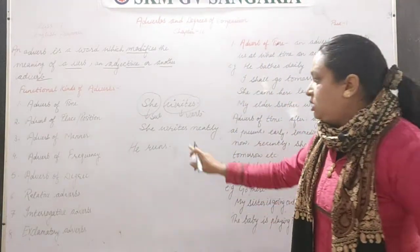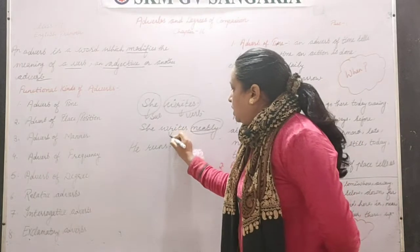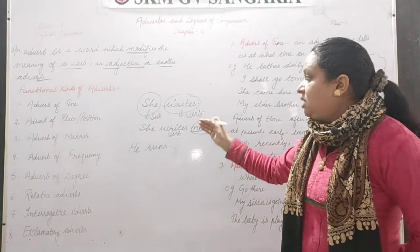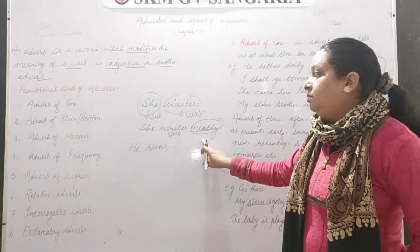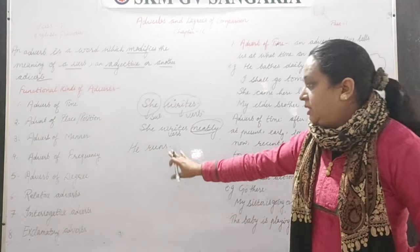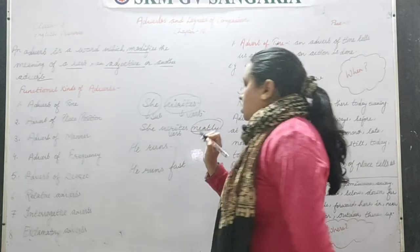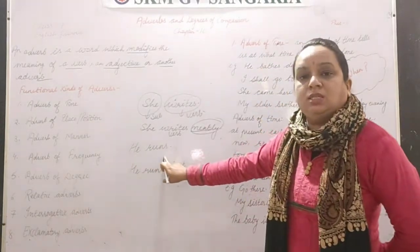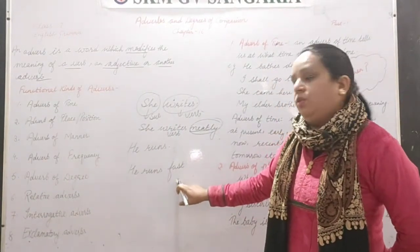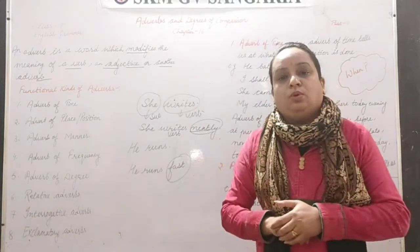She writes neatly — the word 'neatly' I have added is changing the meaning of the verb 'writes.' Earlier it was just 'she writes,' but now it tells us how she writes: neatly. So this word is known as an adverb. Similarly, 'he runs fast' — 'he' is subject, 'runs' is verb, and 'fast' is adding meaning to the verb 'runs,' so 'fast' is working as an adverb here.